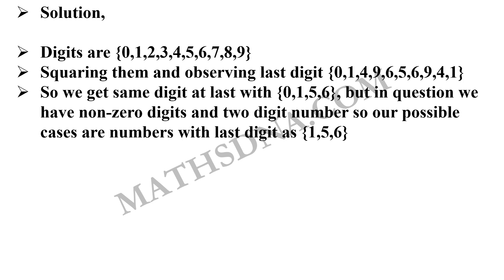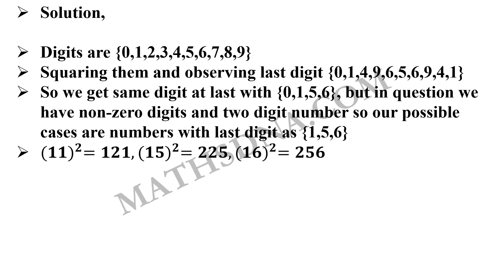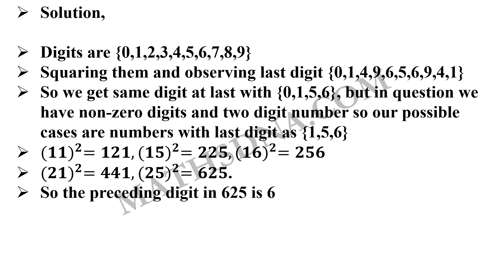Now we consider all 2-digit numbers with last digit as 1, 5, and 6. So: 11² = 121, 15² = 225, 16² = 256, 21² = 441, and 25² = 625. Many students know directly that 25 will be the answer, but if you don't, you can solve it this way — it will hardly take 2 minutes. Thus the preceded digit C for the number 25 (giving 625) is 6, which is option D. Hence the correct answer is option D. Thank you.